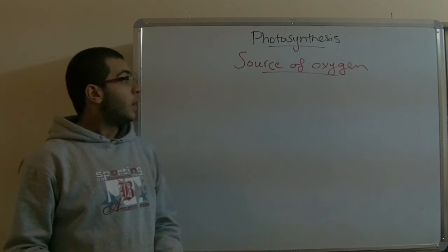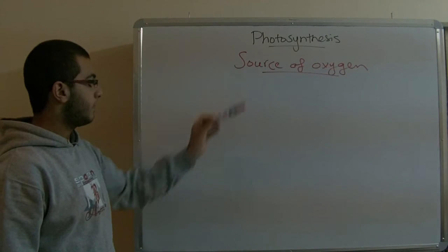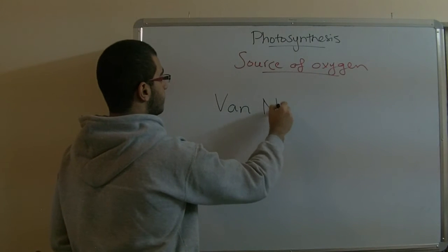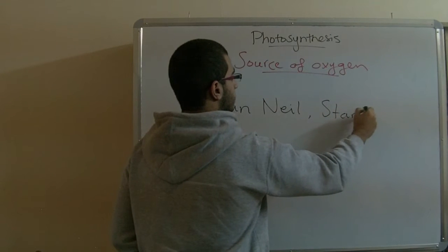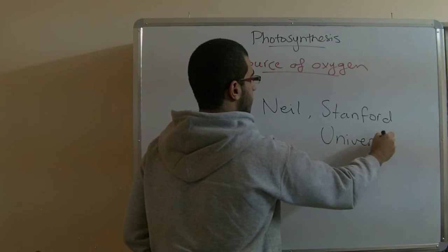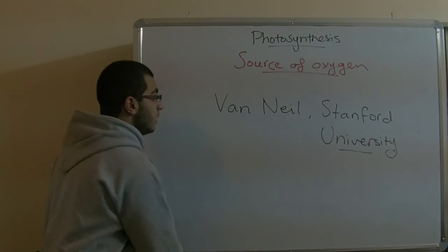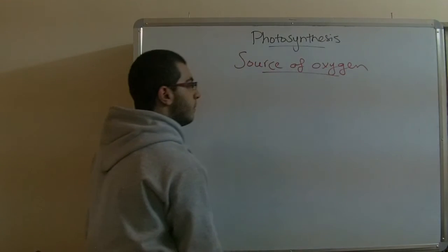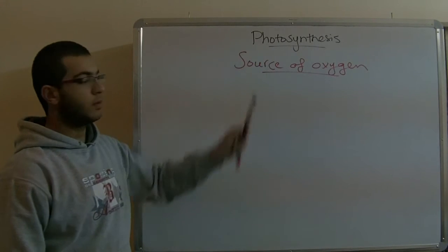The first scientist who pointed out that oxygen evolves from the photosynthesis process was a scientist called Van Niel at Stanford University. To point this out, he used something different from the plant to show that oxygen evolves from the photosynthesis process.